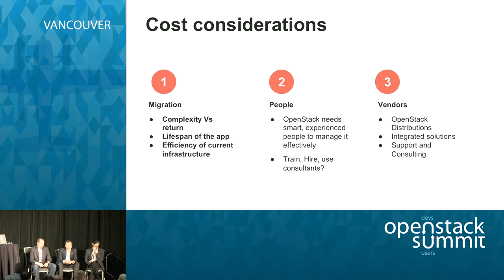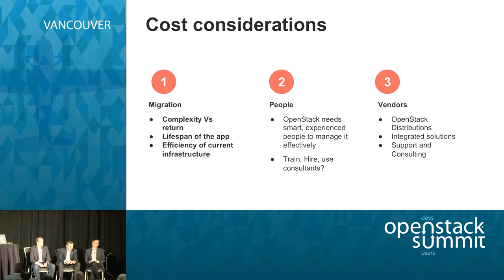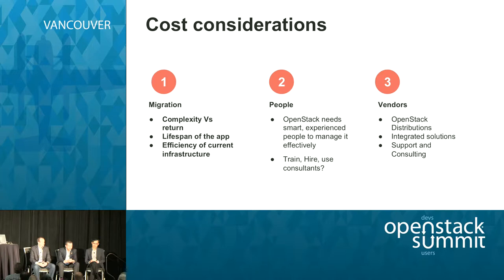Businesses are looking to solve business problems. People don't buy servers because they want servers — they buy servers to run business applications. So putting applications into OpenStack and working out where the economics lie in terms of migrating existing applications — obviously new apps, cloud-native apps. Then there's people: how do you get your OpenStack environment up and running. And then vendors. These three cost areas — migration, people, and vendors — are what we'll drill down into.